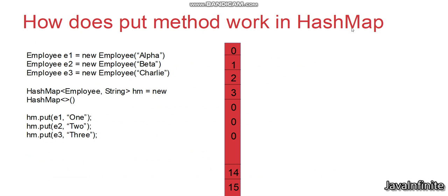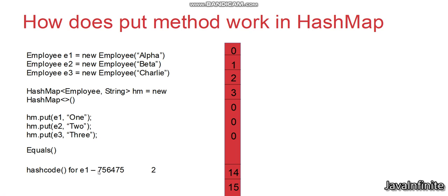Now let us see how the put method works in HashMap. For this example, we have created three employee objects e1, e2, e3 with the values alpha, beta, and charlie. We have created a HashMap hm where the key is the employee and the value is a string. We are inserting all three employee objects as keys with values 1, 2, and 3. The HashMap takes the key object — here the key is e1 — and it calculates the hash code for this object. For e1, the hash code is 756475.